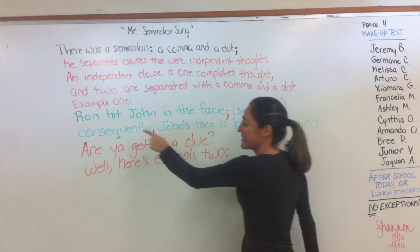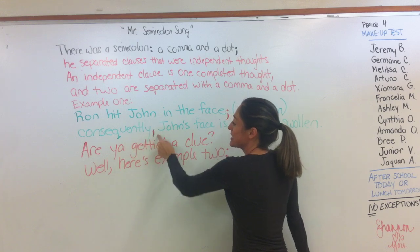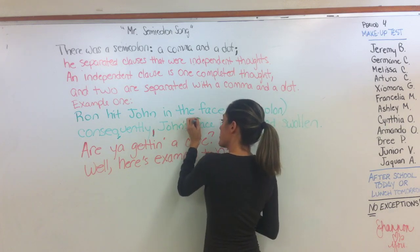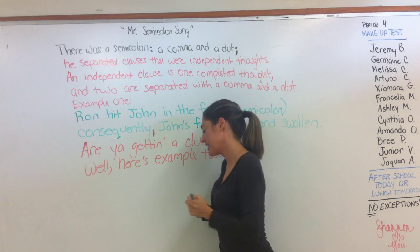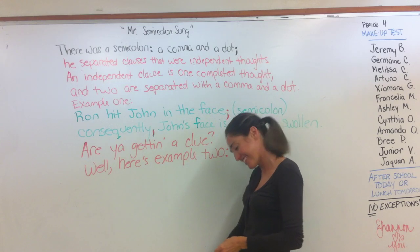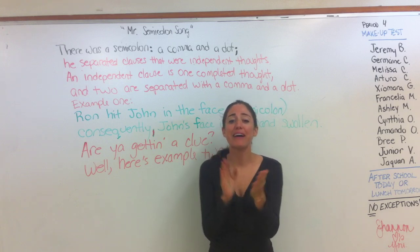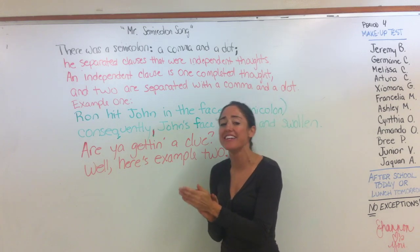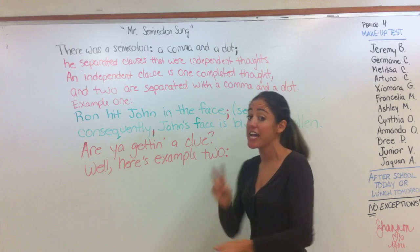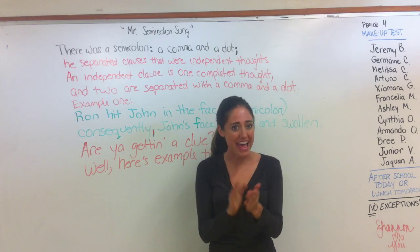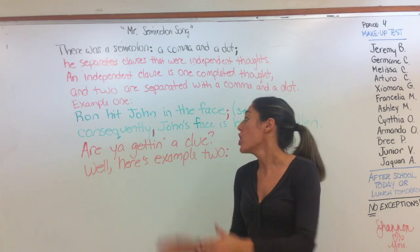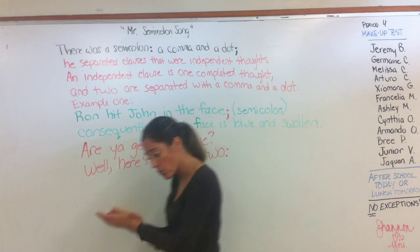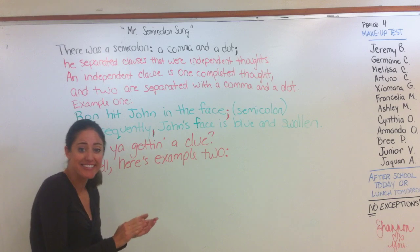From the top — sing with me. There was a semi-colon, a comma and a dot. He separated clauses that were independent thoughts. What's that? An independent clause is one completed thought. Two are separated with a comma and a dot. Example one: Ron hit John in the face — semi-colon — consequently, John's face is blue and swollen. Are you getting a clue? Well, here's example two.